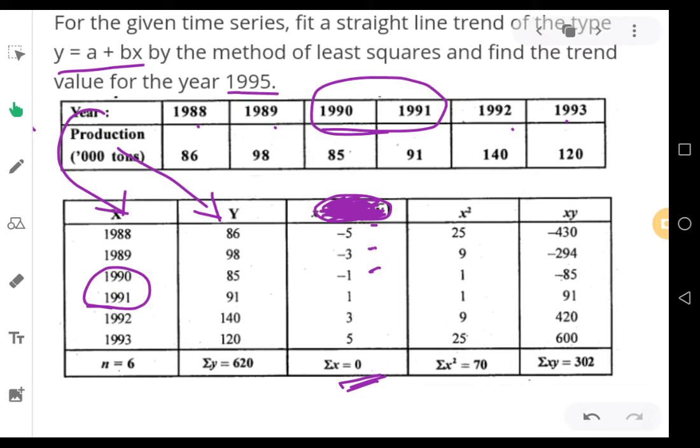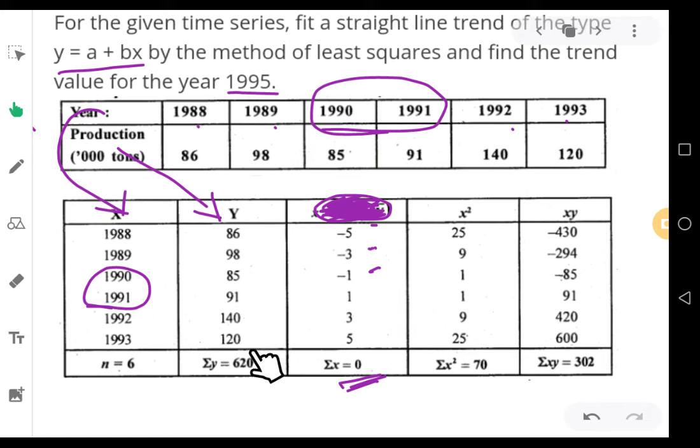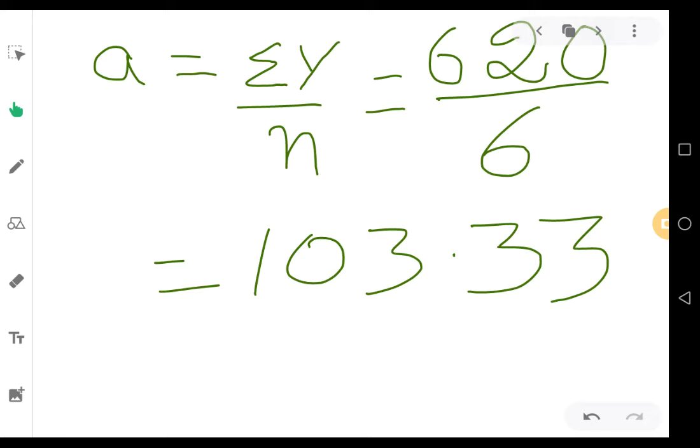Proceed with calculation of the value of a and b. The formula for a equals summation y by n. From the table, summation y is 620 by n, and n equals 6. Therefore a equals 620 by 6, which is 103.33.